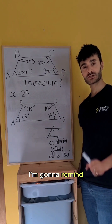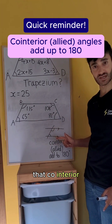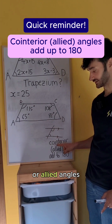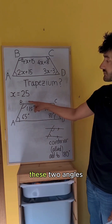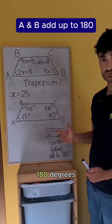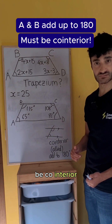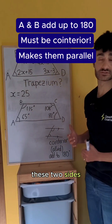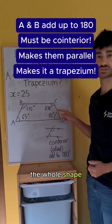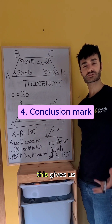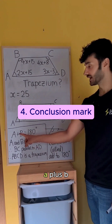I'm going to remind you of a rule with parallel lines: co-interior angles, or allied angles, add up to 180 degrees. These two angles add up to 180 degrees, so they must be co-interior, which means these two sides must be parallel, which makes the whole shape a trapezium. This gives us our last mark, which is a conclusion mark.